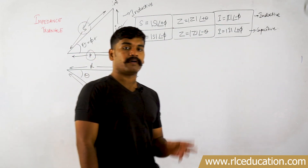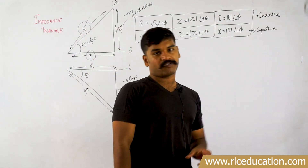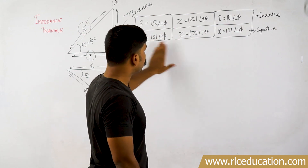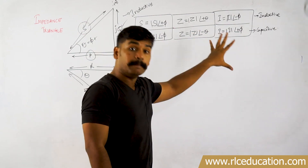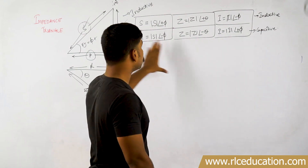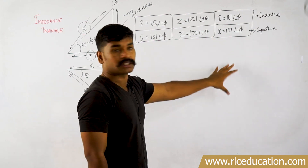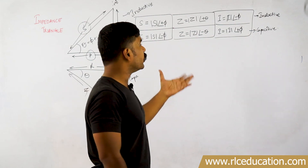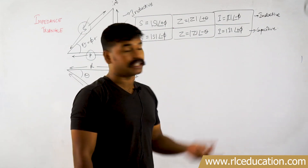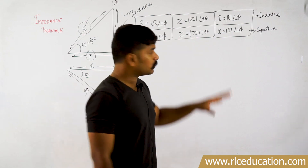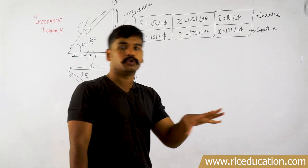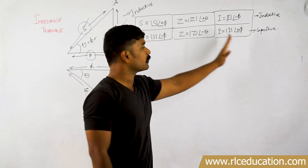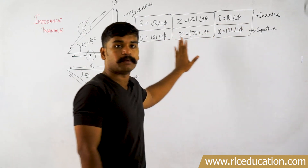So this covers apparent power, active power, reactive power, as well as power factor, and the ways to represent powers, impedances, or currents in polar form. Many students get confused about where to use a minus angle or a positive angle, and how to determine the type of circuit from a given polar form angle. This will be very helpful, especially in competitive exams.